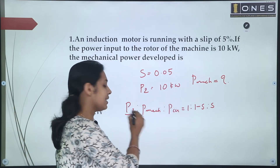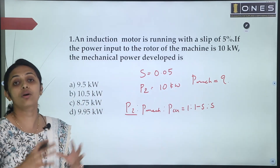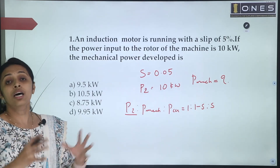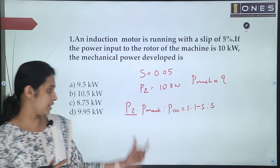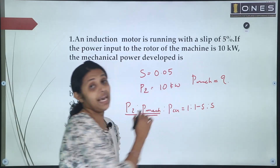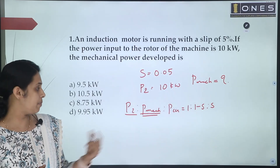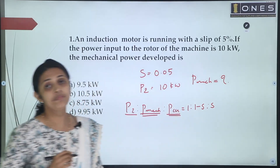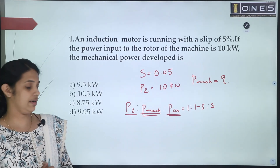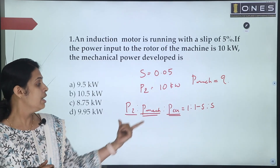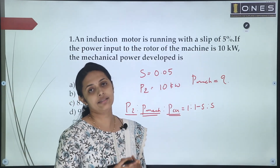P2 is the rotor input. Pmec is the mechanical power developed in the rotor. Pc is the rotor copper loss. So the relation is: P2 : Pmec : Pc = 1 : (1 - S) : S.